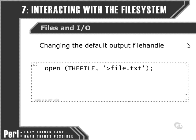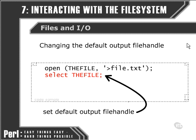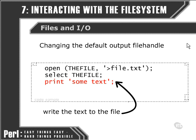Whereas we could simply do a print function to the file handle, we can do this another way — by using the select function to select the file as our default output file handle. What that means is when we next use a print function, it's actually now printing to the file, because we've selected the file as our default output file handle.